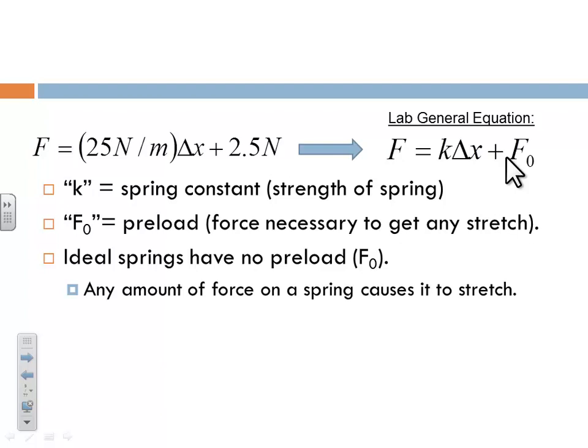An example of a spring that's ideal is one that already stretches under its own weight. So you hang it up, and there's enough weight to it, and it's weak enough where gravity causes it to already stretch. So any additional amount of force that you apply to it will cause it to stretch. A tiny little bit of force will cause it to stretch.